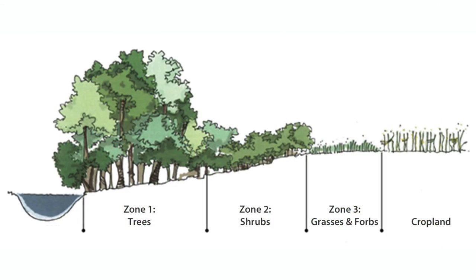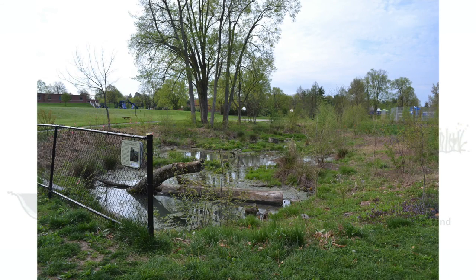Zone three includes grasses and herbaceous perennials that are tolerant of moderate to dry soil conditions. In urban settings, it may not be possible to create this delineation due to space and visibility constraints, but it is a good idea to include trees, shrubs, grasses, and herbaceous plants.